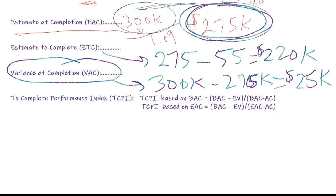There's one more thing to cover: the to-complete performance index (TCPI). This tells you what cost performance index you need for the remainder of the project to meet a certain target. There are two examples: TCPI based on the budget at completion (BAC) and TCPI based on the estimate at completion (EAC).